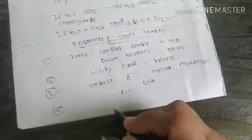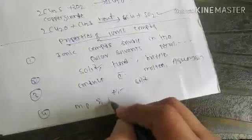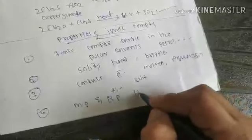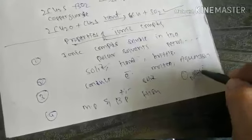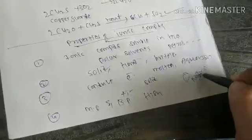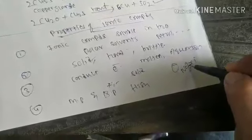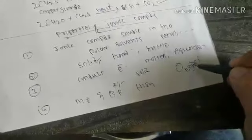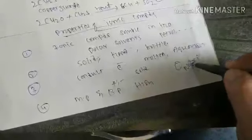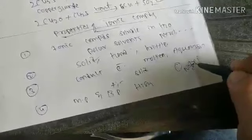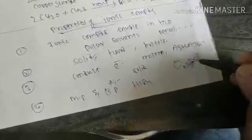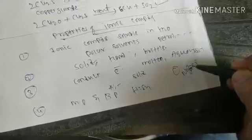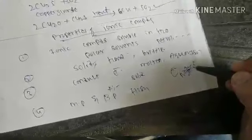The last property: ionic compounds have very high melting and boiling points. For example, sodium (Na⁺) and chlorine (Cl⁻) have a strong electrostatic force of attraction — to break this bond, a large amount of energy must be supplied. That is also why they are solid in nature: the electrostatic force keeps atoms very close together, which is characteristic of the solid state. Thank you for watching — please subscribe and share.